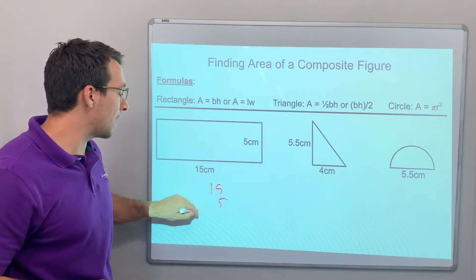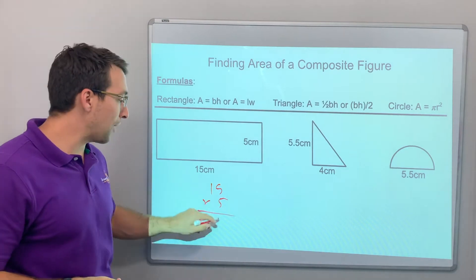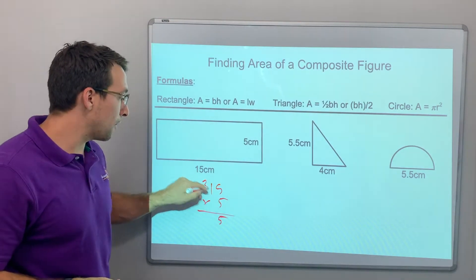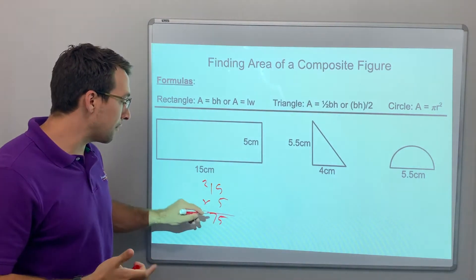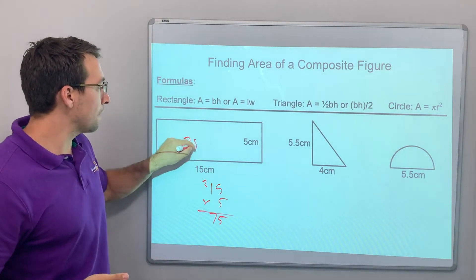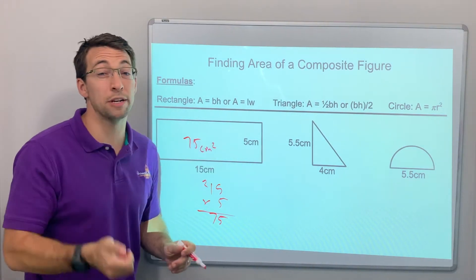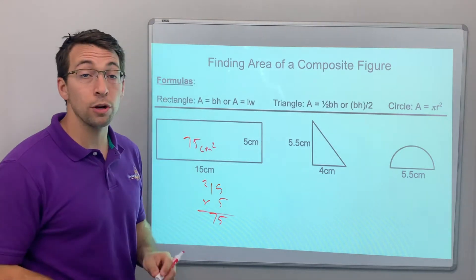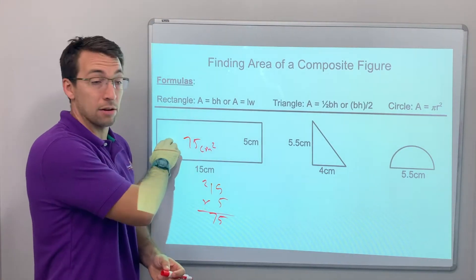15 times 5 is what? 5 times 5 is 25. 5 times 1 is 5, 5 plus 2 is 7. 75. Okay, so 75 centimeters and it's squared because it's two-dimensional. Cubed is for three-dimensional, it's volume. Squared is area.